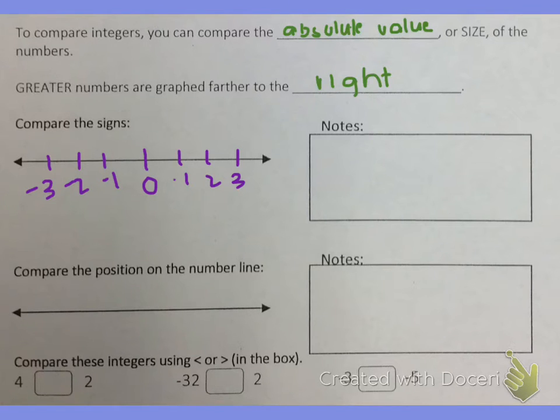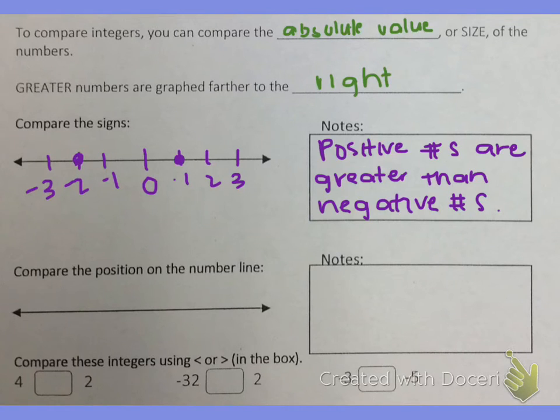So let's look at negative 2 and positive 1. Now if we're just comparing the signs I know that positive numbers are always greater than negative numbers. So this means that positive 1 is greater than negative 2.